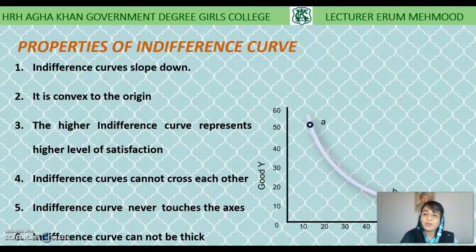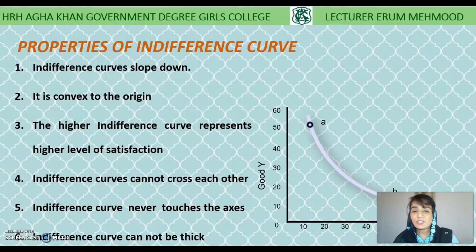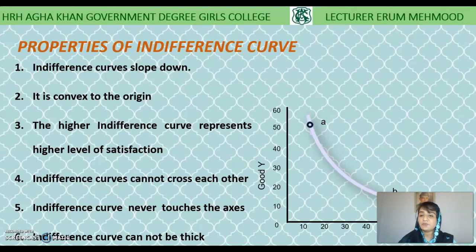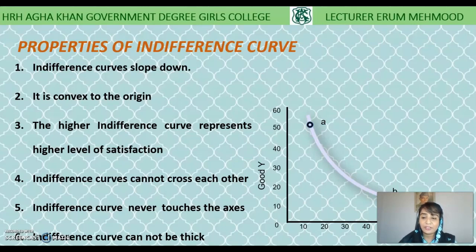Now let's start the properties of the Indifference Curve. First, the indifference curve slopes downward. Second, it is convex to the origin. Third, the higher indifference curve represents the higher level of satisfaction. Fourth, indifference curves cannot cross each other. Fifth, the indifference curve never touches the axis. Sixth, the indifference curve cannot be thick.